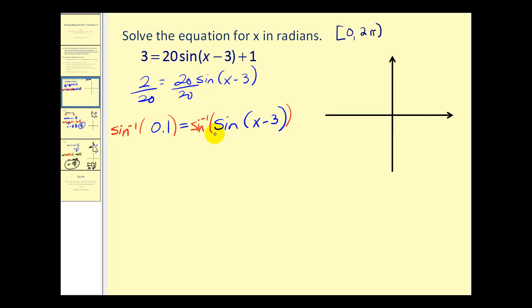Now what we can do is take the inverse sine of both sides. Now on the right side, inverse sine of sine x minus 3 will just equal x minus 3. Remember these are inverses of one another and they will undo each other. And we have the inverse sine of 0.1.